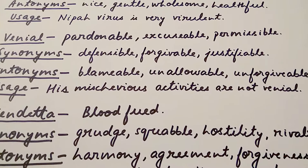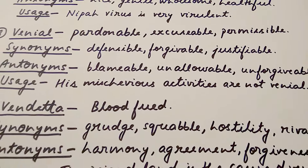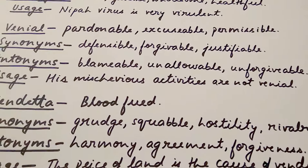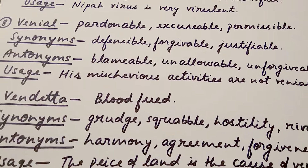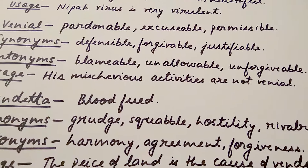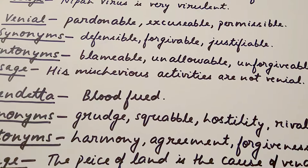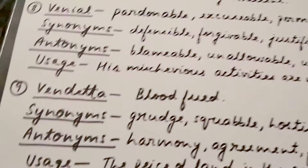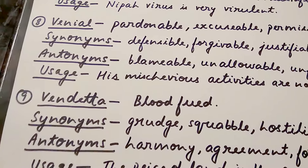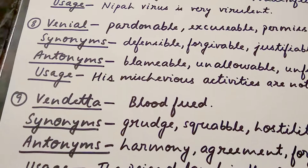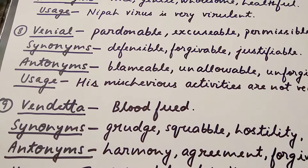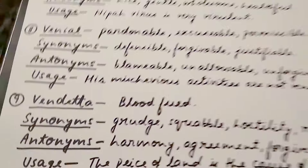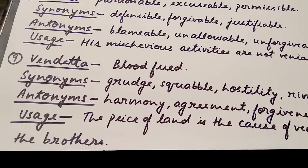The next word is 'venial', which means pardonable, excusable, or permissible. Its synonyms are 'defensible' and 'forgivable'. Its antonyms include 'blameable' and 'unallowable'. Usage: 'His mischievous activities are not venial' — his mischievous activities are not pardonable or forgivable. Trick: remember 'venial' from 'veena' — people who play the veena can be pardoned or forgiven.